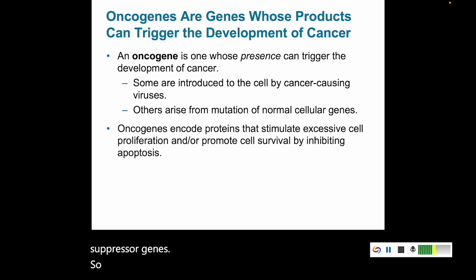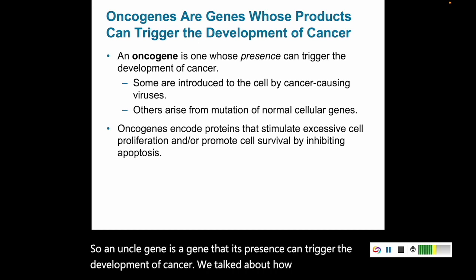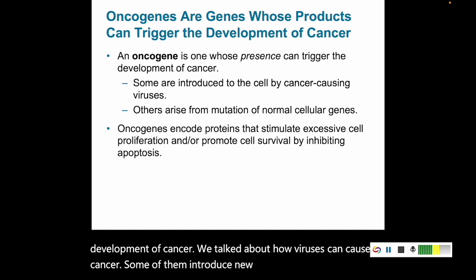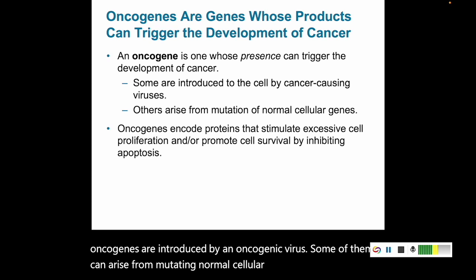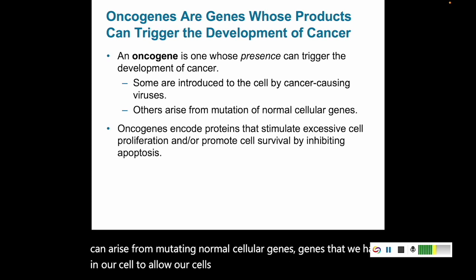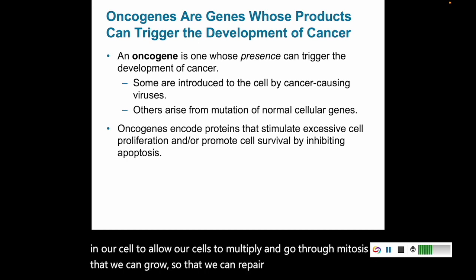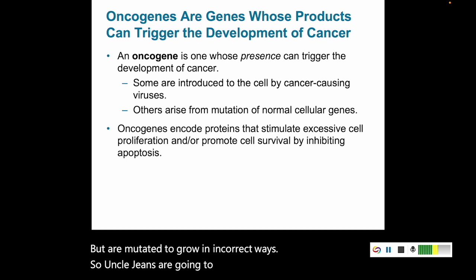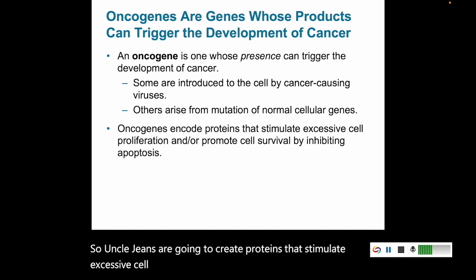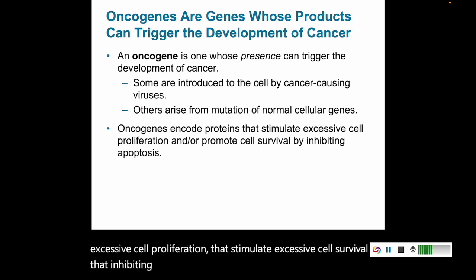An oncogene is a gene whose presence can trigger the development of cancer. We talked about how viruses can cause cancer — some of them introduce new genes into the cell, so some oncogenes are introduced by an oncogenic virus. Some can arise from mutating normal cellular genes, genes that allow our cells to multiply and go through mitosis. Oncogenes create proteins that stimulate excessive cell proliferation, excessive cell survival, and inhibit apoptosis, so you're building up cells inappropriately.